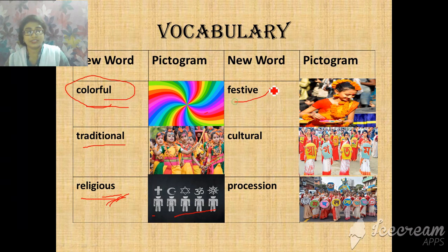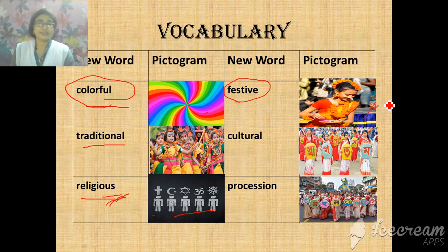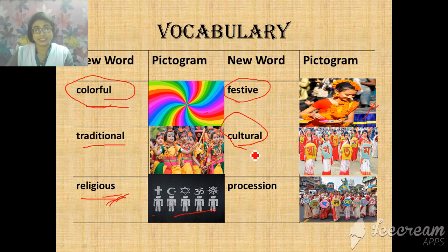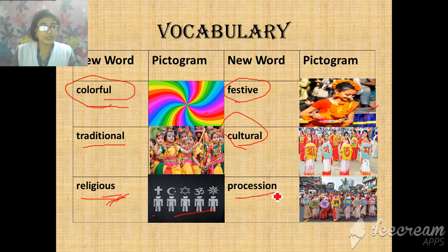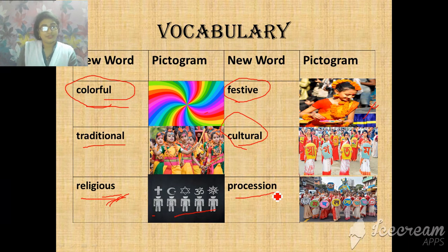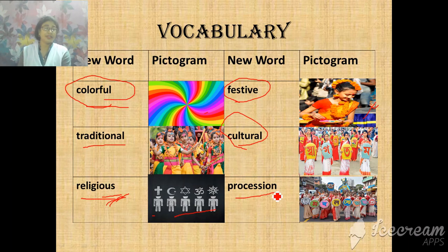Festive. When for a different program we adorn ourselves with a new look, it's called festive. The environment is also different and we adorn ourselves with beautiful things — our equipment is also festive. Cultural — the next word is cultural. And we have procession. Many people, for a different reason, walk on the road — that is procession. So, the words are colorful, traditional, religious, festive, cultural, procession.